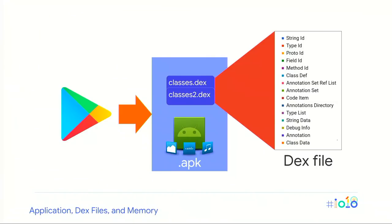Before we talk about RAM and storage optimizations, let's review how applications work on Android devices. An application normally comes in an application package kit, also known as an APK. Inside the APK, there are usually one or more Dalvik executable files, also known as DEX files, that contain instructions that ART uses to either interpret or compile your application. Since DEX files are required to be quickly accessed during execution, they are mapped directly into memory during application startup. This means there is a startup cost and RAM cost proportional to the size of the DEX file. DEX files are also usually stored twice on the device: inside the APK and in an extracted form so ART can have faster access during startup.